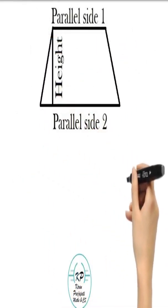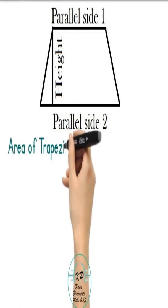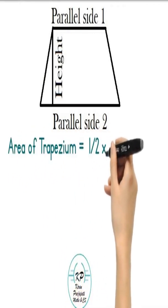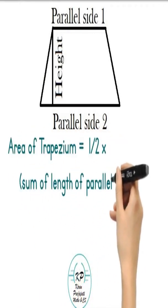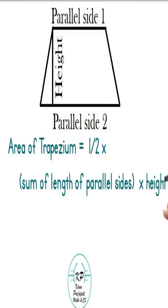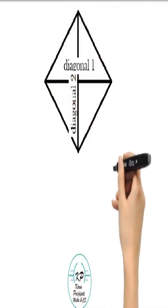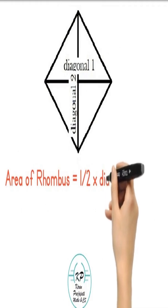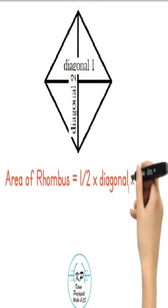Area of trapezium is equal to half into sum of length of parallel sides into height. Area of rhombus is equal to half into diagonal 1 into diagonal 2.